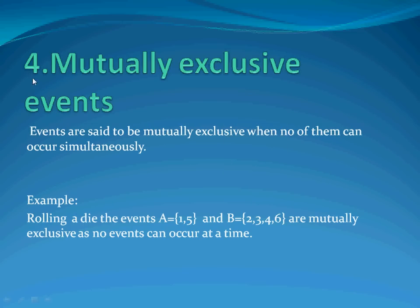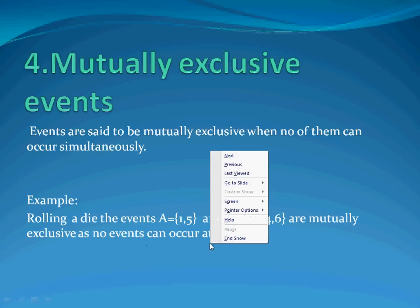Then is the mutually exclusive event. Events are said to be mutually exclusive when none of them can occur simultaneously. For example, rolling a die: the events A = {1, 5} and B = {2, 3, 4, 6} are mutually exclusive, as no two events can occur at the same time. When {1, 5} is occurring, {2, 3, 4, 6} can never occur.